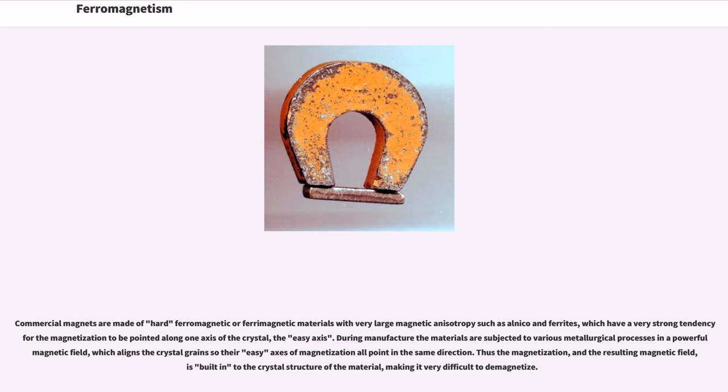Commercial magnets are made of hard ferromagnetic or ferrimagnetic materials with very large magnetic anisotropy such as alnico and ferrites, which have a very strong tendency for the magnetization to be pointed along one axis of the crystal, the easy axis. During manufacture the materials are subjected to various metallurgical processes in a powerful magnetic field, which aligns the crystal grains so their easy axis of magnetization all point in the same direction. Thus the magnetization, and the resulting magnetic field, is built into the crystal structure of the material, making it very difficult to demagnetize.